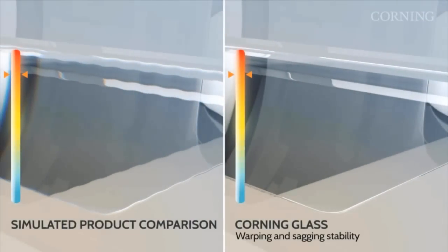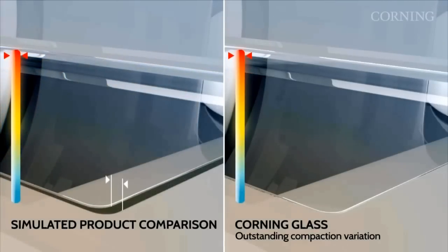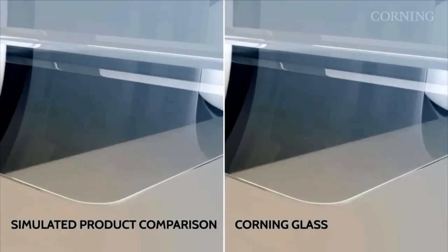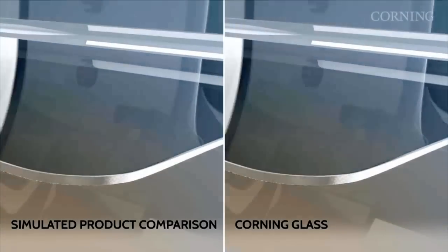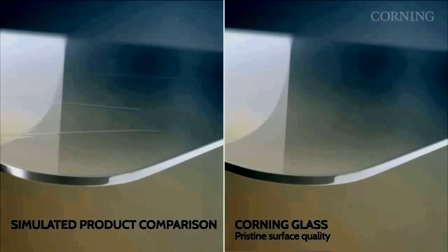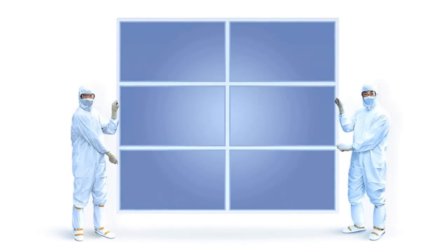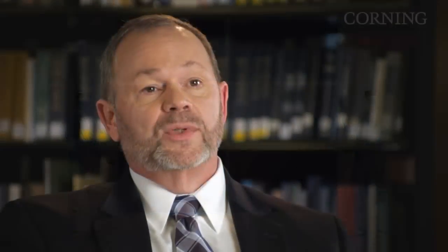The glass has to be more uniform than it's ever had to be before. In high performance displays, the pixels are smaller and they're using very large sheets of glass — not Gen 8, but approaching Gen 8. The dimensional stability across the entire length of the substrate has to be extremely uniform and extremely predictable.